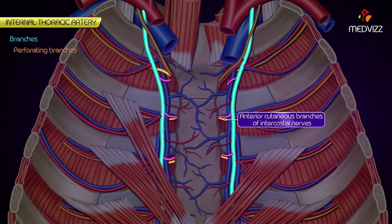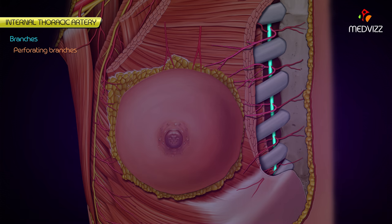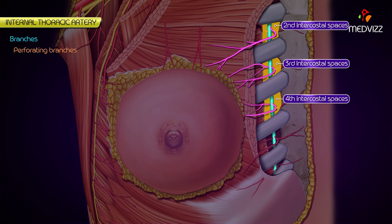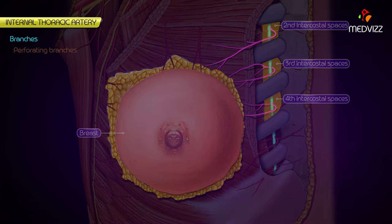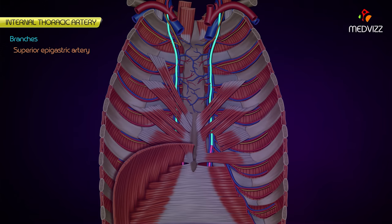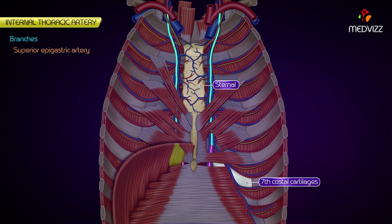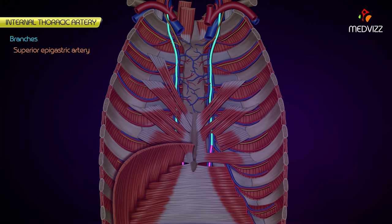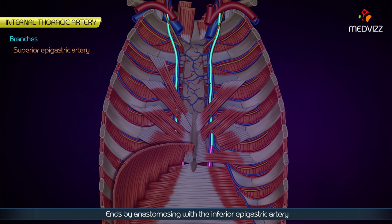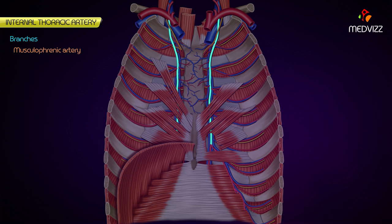In females, the perforating branches of the second, third, and fourth intercostal spaces are larger and supply the breast. The superior epigastric artery runs downwards behind the seventh costal cartilage, between the sternal and first costal slips of the diaphragm. It enters the rectus sheath where it ends by anastomosing with the inferior epigastric artery.